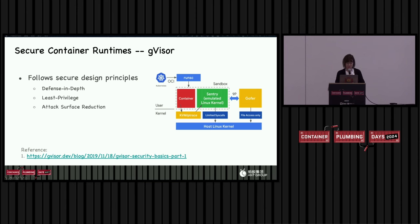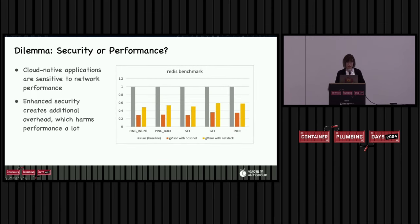Security container runtimes strengthen isolation, but there is always a dilemma: we have to choose between enhanced security and good performance. Most cloud-native applications are very sensitive to network performance, but the enhanced security introduces additional overhead that harms performance. On the right side is a Redis benchmark we tested on RunC container and GVisor. GVisor has two different network modes: one is host INAT, which routes all network syscalls back to the Linux kernel's NAT stack, and the other is the NAT stack implemented in Sentry itself. Even with the NAT stack, which has better performance, it can only get no more than 60% of RunC container's performance.